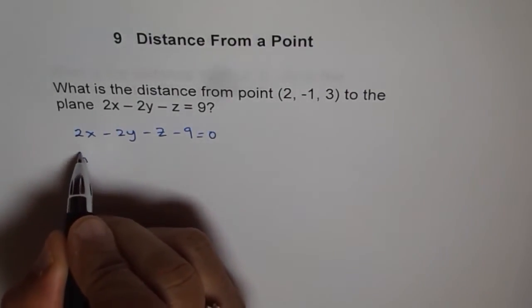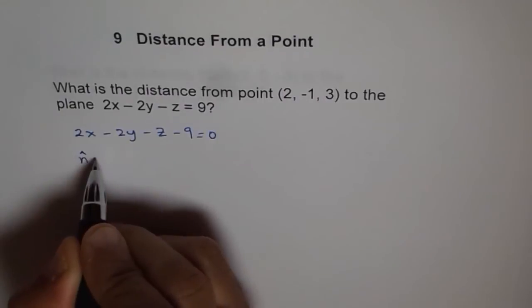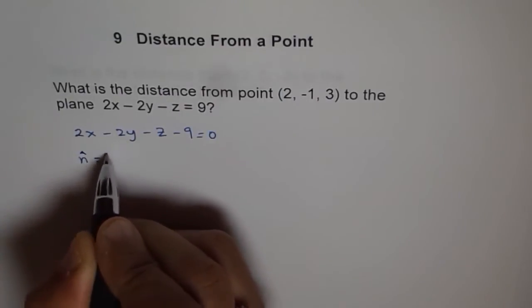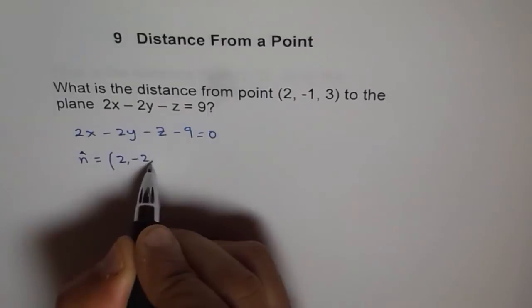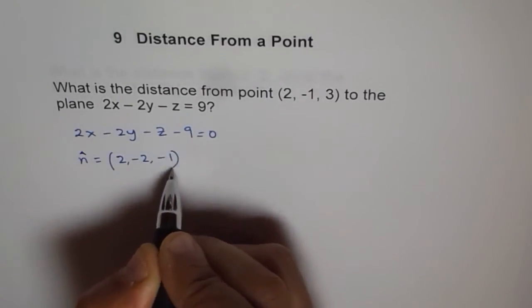What are the normal vectors here? The normal is equal to (2, -2, -1).